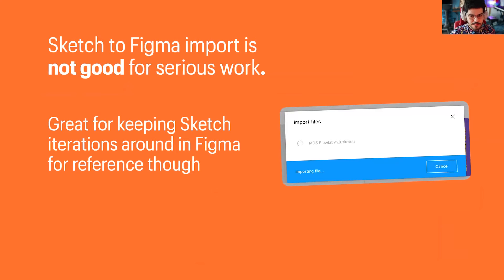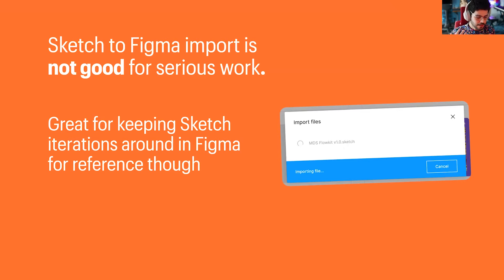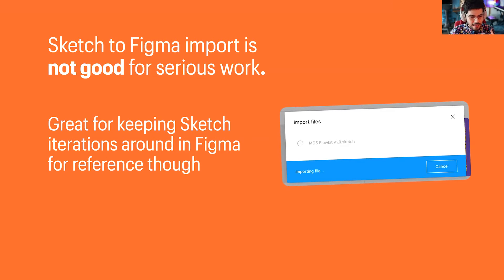In my experience, the Sketch import feature from Figma works really well if you want to keep your iterations around in Figma for reference. But if you have anything complex like masks or shadows, sometimes things don't translate very well. Most importantly, if you want to keep your designs linked to a library, it won't magically just use them because your library will probably be in an external file — you've got to build it up from the ground. It took us quite a bit of time. We had someone dedicated to this as a side project, but it really pays off once you have everything in place.